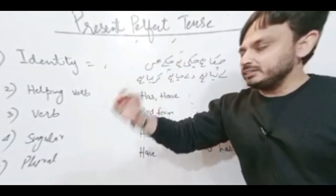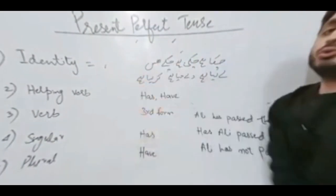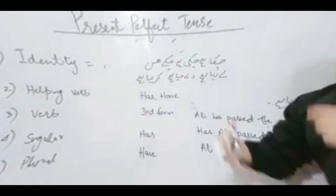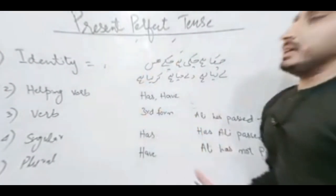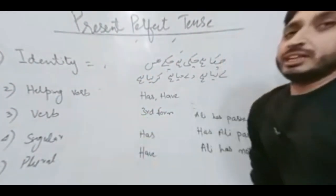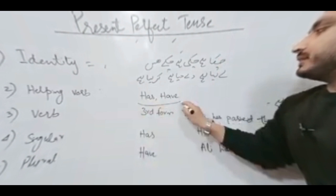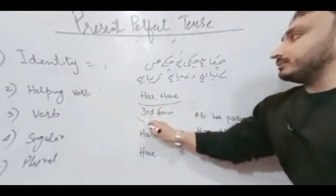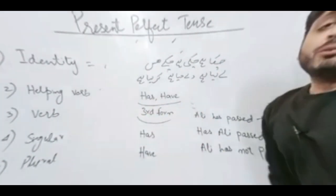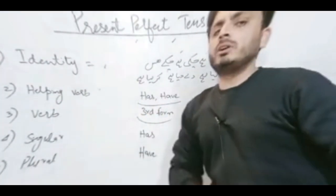So any action which has been done, its identity would be chuka hai, chuki hai, le liya hai, de diya hai. And if we talk about its helping verb, we will have two helping verbs: has and have. With the verb we will always use the third form of verb.